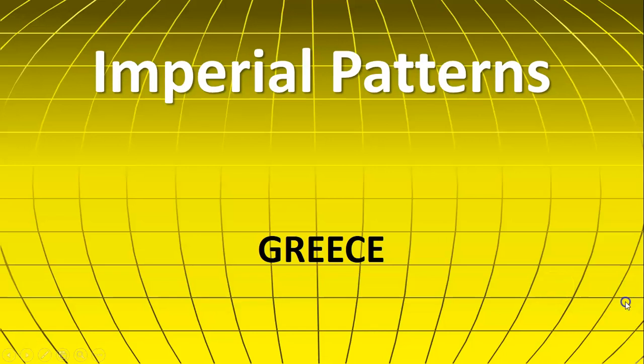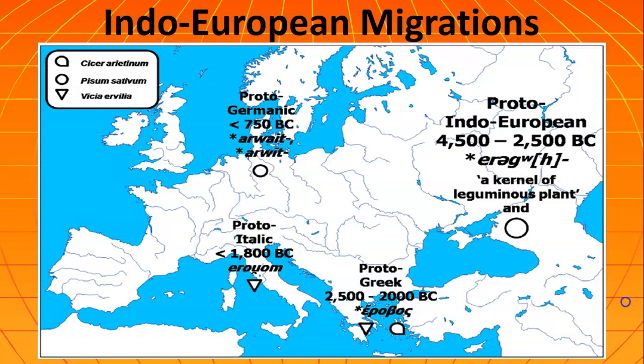Hey guys, Coach Popp here. Thanks for joining me for the videocast of Lesson 3.2. This is part of a series of lessons on imperial patterns, and today what we're looking at is Greece — how is it that Greece ended up becoming an empire?